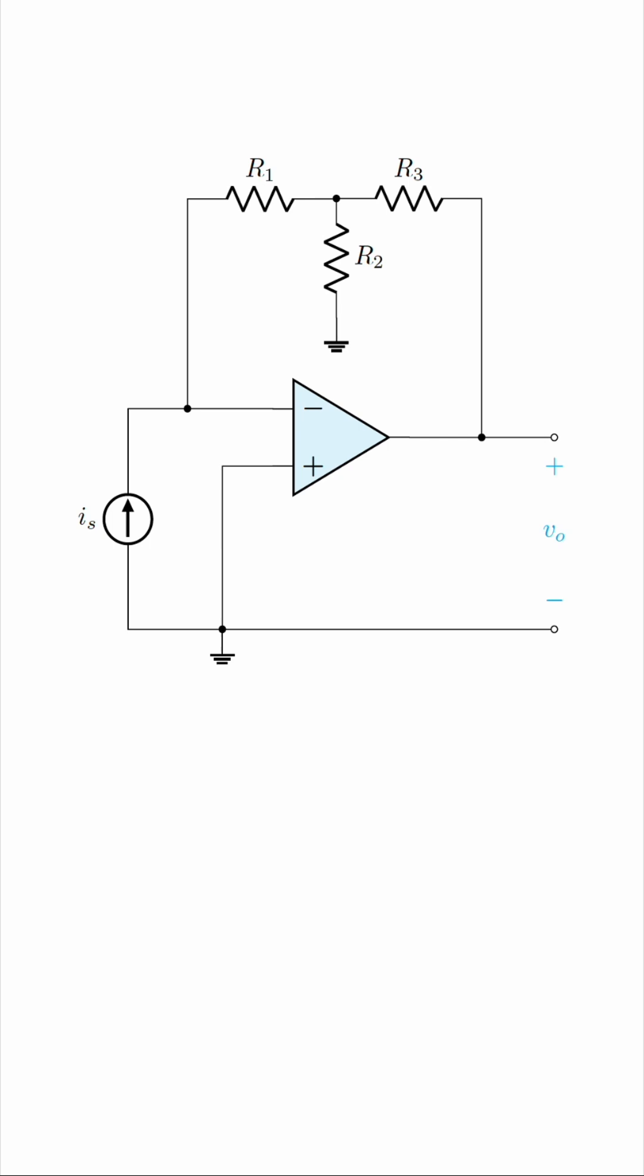Any ideal op-amp is governed by these two equations. Vp, the voltage at the non-inverting terminal, must be equal to Vn, the voltage of the inverting terminal. The second equation is Ip and In must both be zero, so no current enters either terminal of an ideal op-amp. With this, we can solve any op-amp circuit.